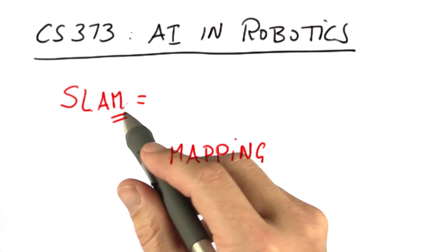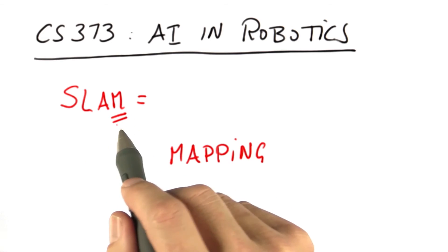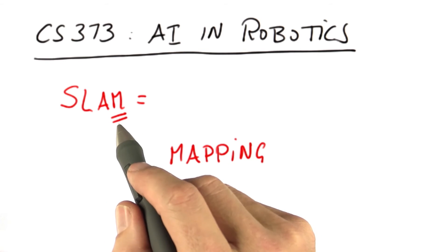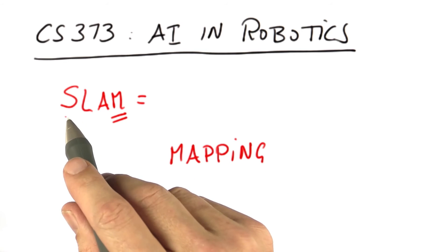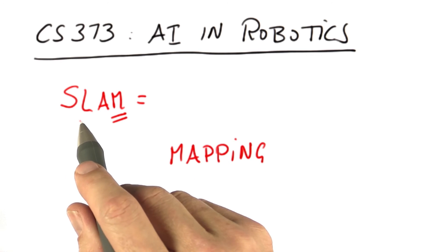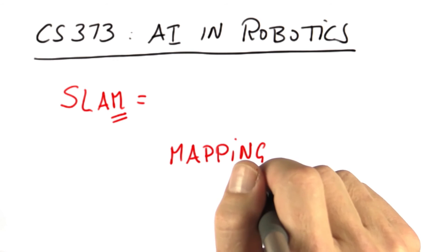So the key insight in building maps is that the robot itself might lose track of where it is by virtue of its motion uncertainty. We accommodated this in localization by using the existing map, but now we don't have an existing map. We're building the map.